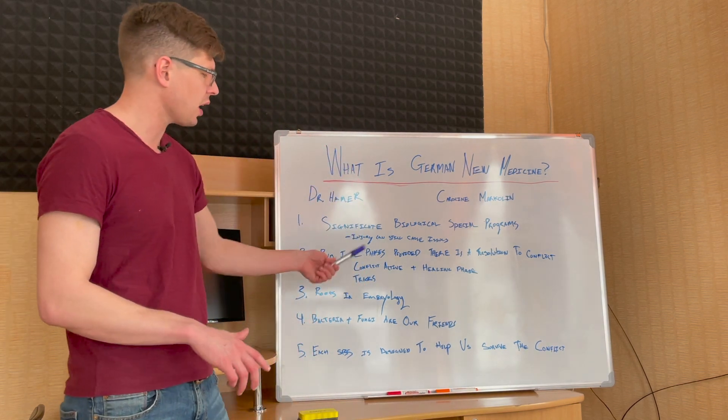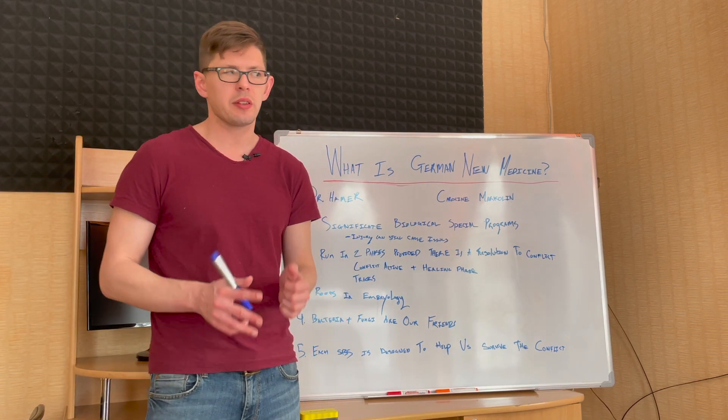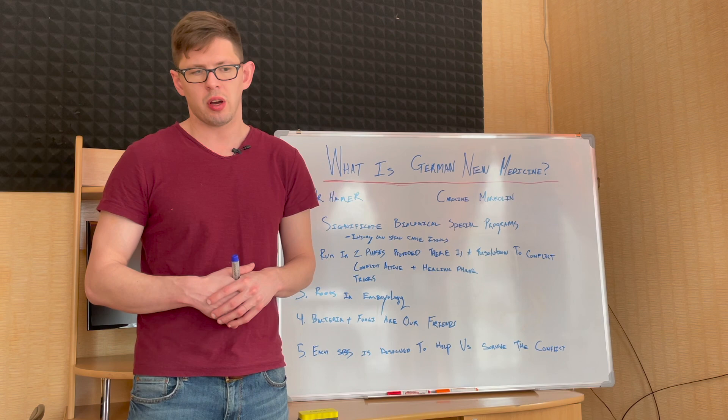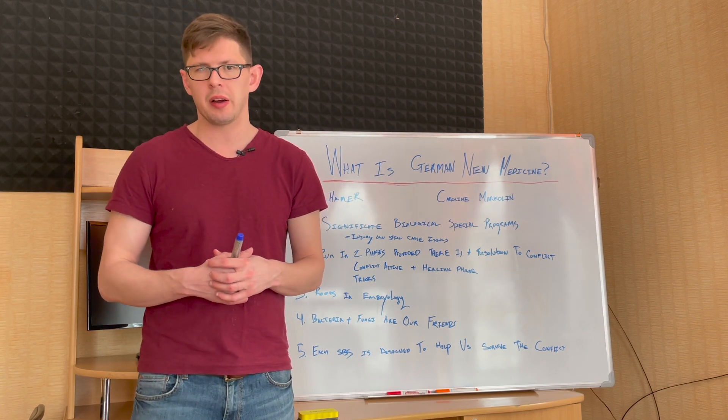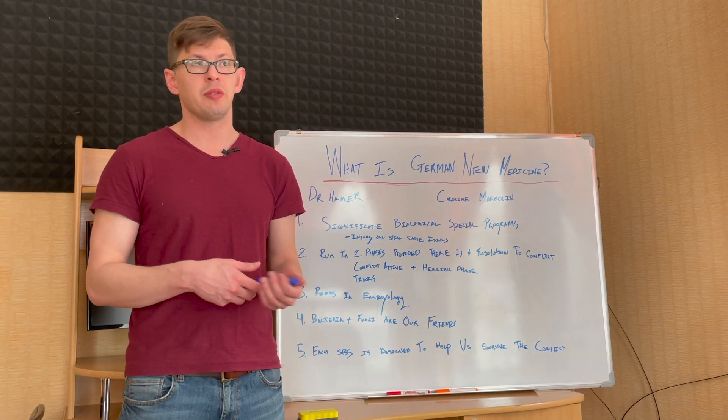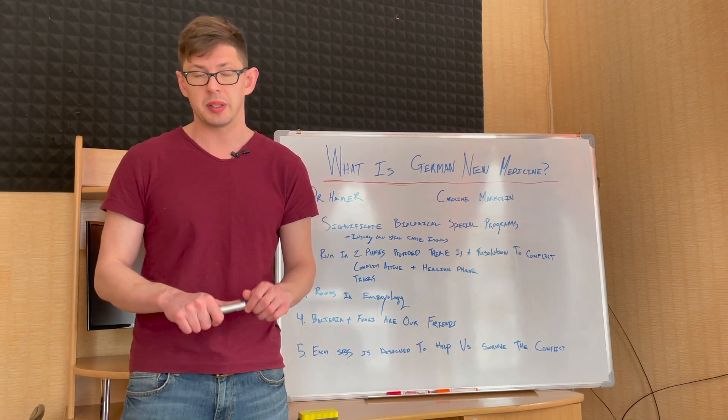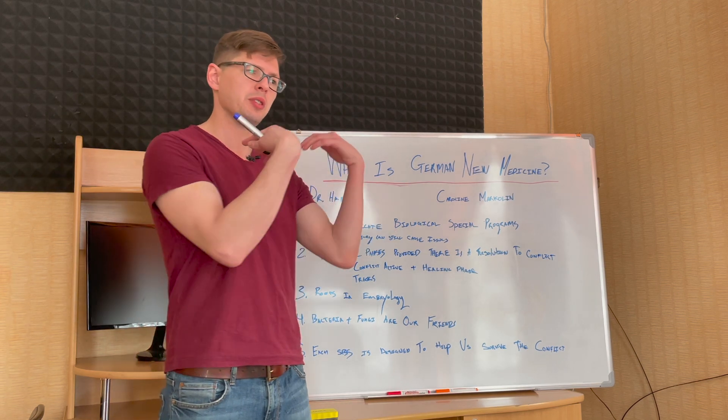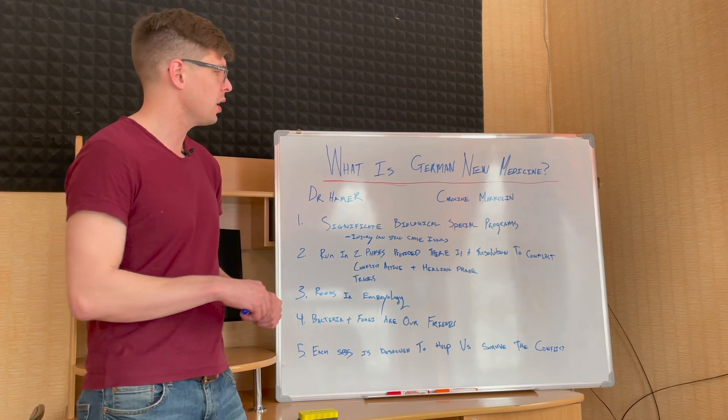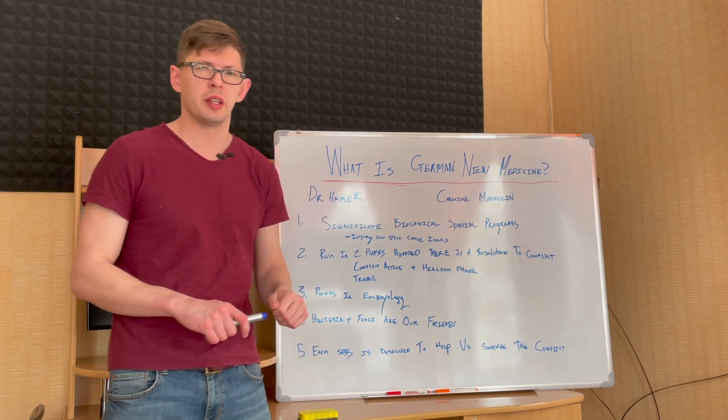That results in diarrhea, blood and mucus, and infections - so-called infections. The bacteria and fungi start to get to work to remove this extra cell tissue you don't need. What happens with a lot of people with these so-called autoimmune diseases like Crohn's and colitis is they get stuck in the healing phase, and they get stuck in the healing phase with tracks. Tracks are things that remind you of the conflict.